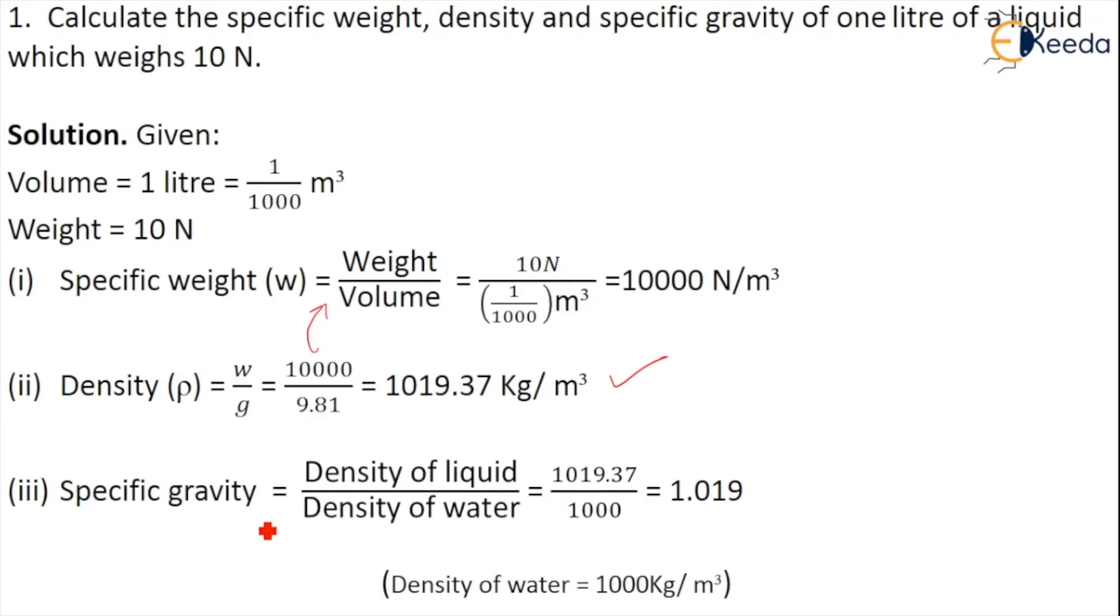What is specific gravity? We know that specific gravity equals density of liquid to the density of water. Density of liquid is calculated 1019.37 and density of water is taken as 1000 kg per meter cube. Hence it is 1.019. Remember specific gravity has no units.